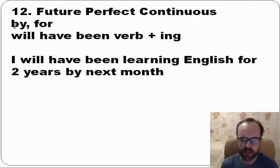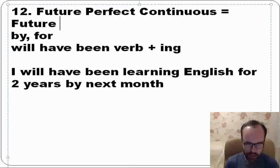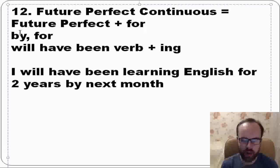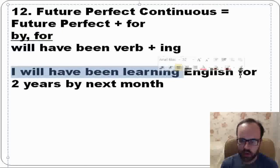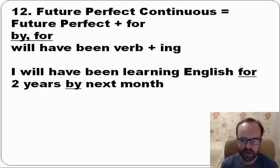The last tense is future perfect continuous — like future perfect, but you also have 'for.' So you have both 'by' and 'for.' We form it with will have been plus verb plus -ing. For example: I will have been learning English for two years by next month. Okay, thanks a lot for your support. See you, bye.